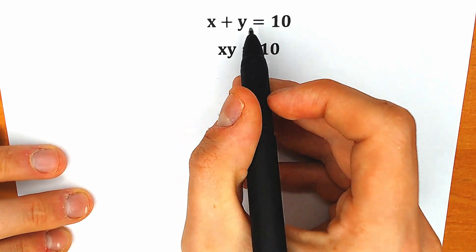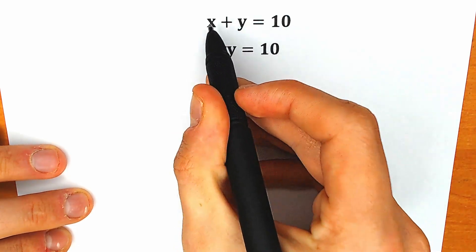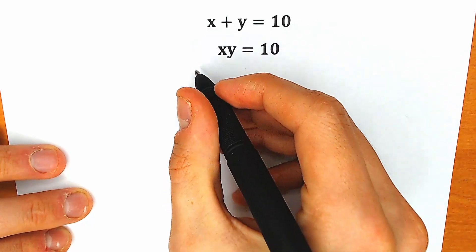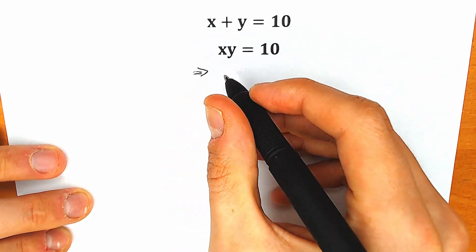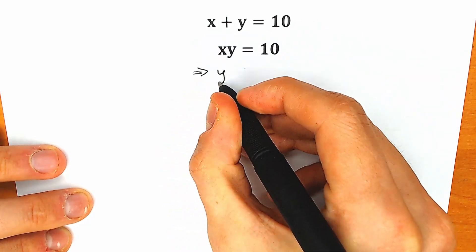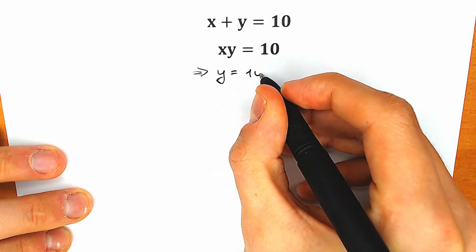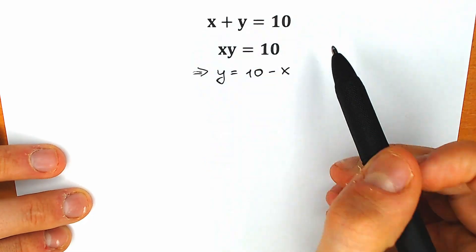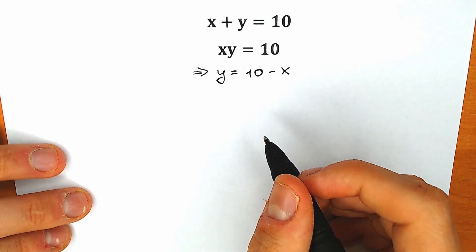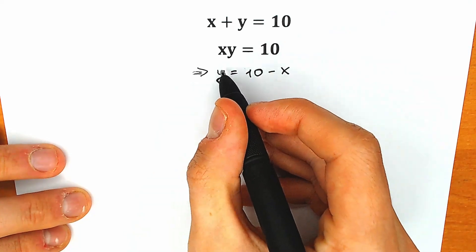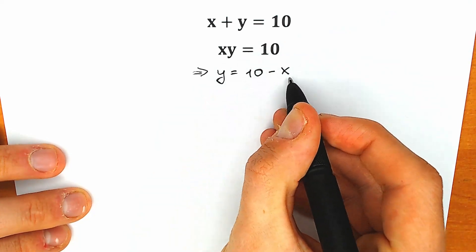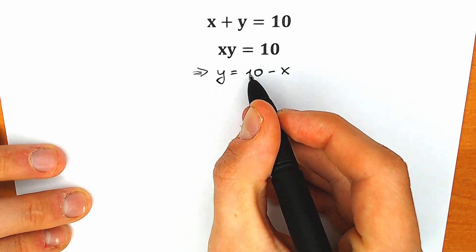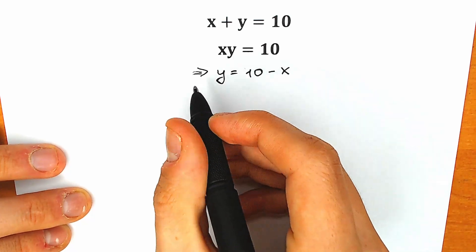So how can we solve this question? From the first equation, let's find our y. So y will be equal to 10 minus x. So our first step, we're going to write y equal to 10 minus x. We just subtract x from both sides, and now let's plug in 10 minus x instead of y.